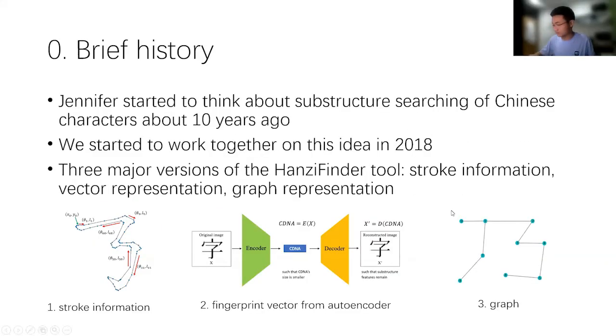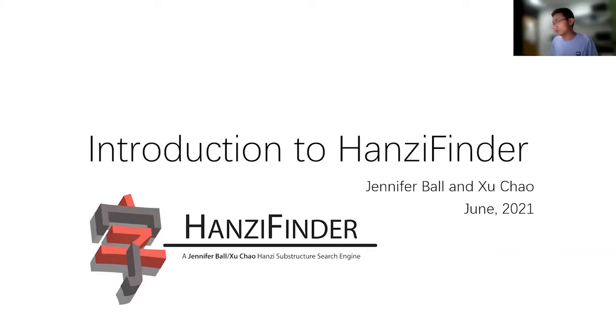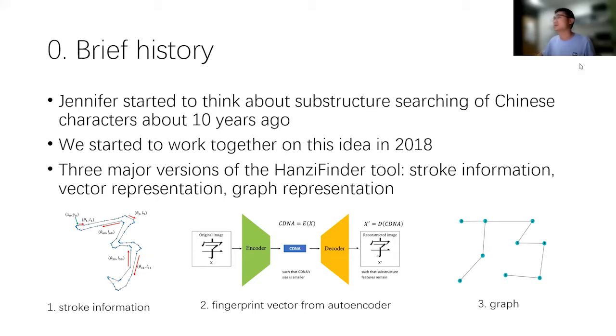Jennifer used this tool to have some fun, I guess. And I will focus more on some fundamental ideas we use in the development when we do this project. Jennifer has this idea of substructure searching on Chinese characters for like 10 years. And we started to work on this like three and a half years ago. At that time, we did some research. We wonder whether there is such tool. And there was no. So we decided to make one by ourselves.